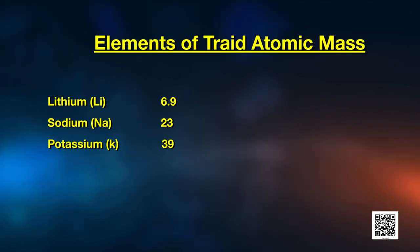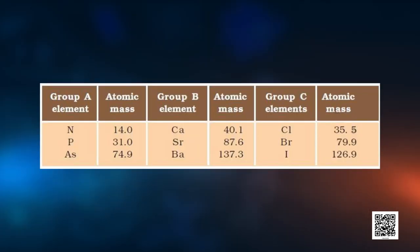For example, the average of the atomic masses of lithium (6.9) and potassium (39) is 46 divided by 2, which equals 23 — matching the atomic mass of sodium, the middle element. On the screen are groups of three elements arranged in order of increasing atomic masses: Group A — nitrogen, phosphorus, arsenic; Group B — calcium, strontium, barium; Group C — chlorine, bromine, iodine. Can you find out which of these groups form Dobereiner's triads?